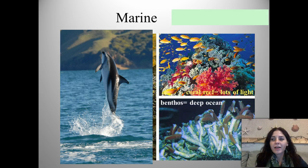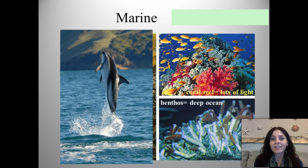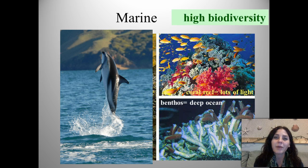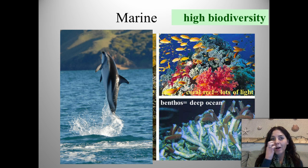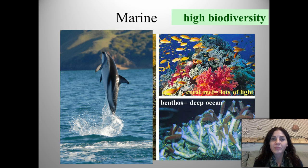The next biome is the marine biome — my absolute favorite. It has very high biodiversity and contains tons of different organisms, including all kinds of fish, coral, whales, dolphins, walruses, and all kinds of different species of algae.